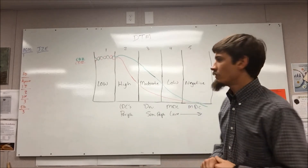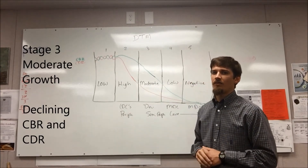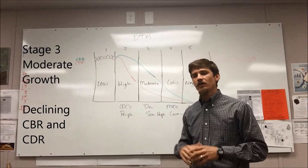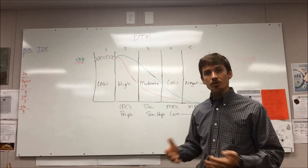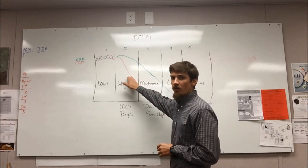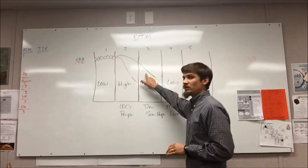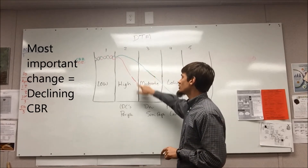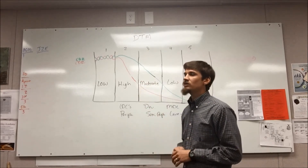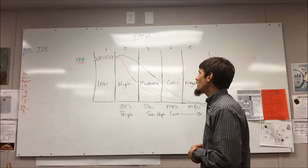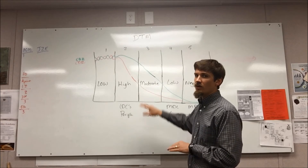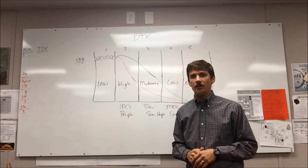As we transition to stage three, it's characterized by a more moderate population growth rate, though the overall population is actually getting higher. There are a lot of changes happening in society, the economy, and socially — especially with women and their position. Whereas in stage two the greatest change was declining death rates, in stage three the greatest change is in the birth rate. Birth rates begin to come down in response to declining death rates, as people notice their children are surviving later in life and they don't need to have as many children.